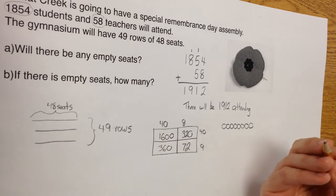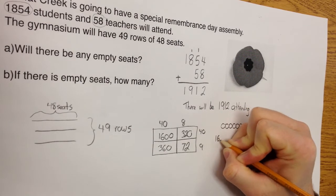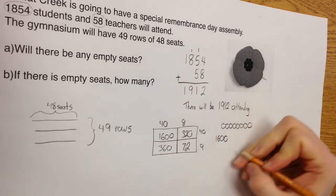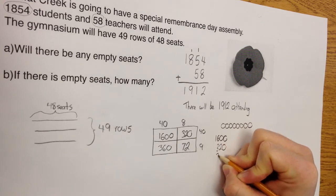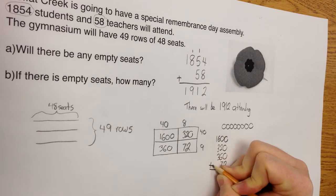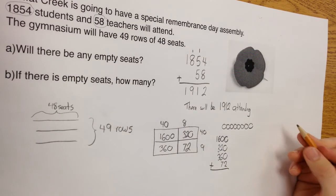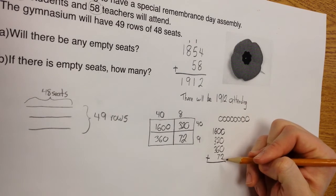What do I do with those numbers? Well, as you know, we add them together. So I'm going to take 1,600, and I'm going to take 320, I'm going to take 360, and I'm going to take 72. It does not matter which order you put these in. You can put them all in whatever orders you want. But you have to make sure you add them up in the proper columns.